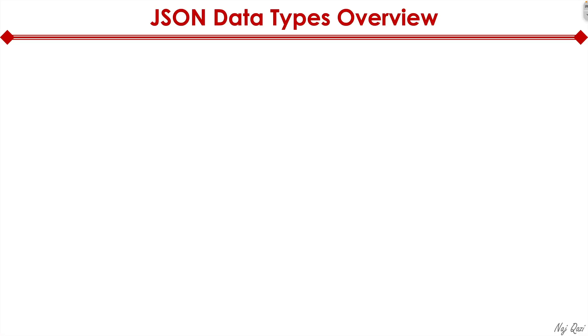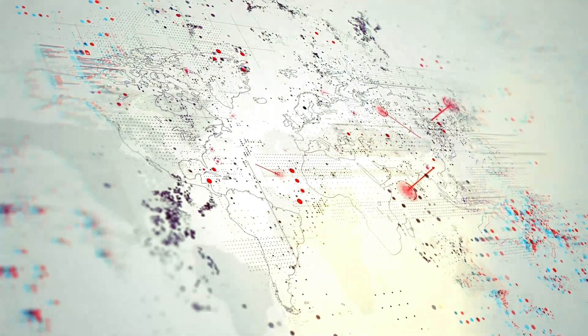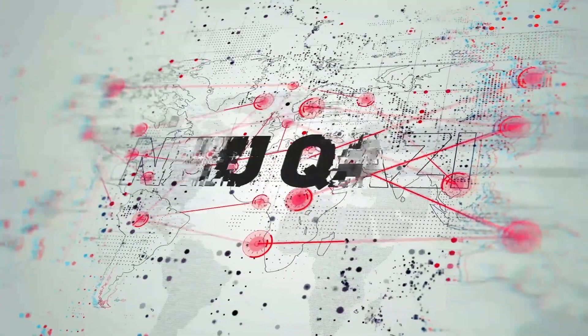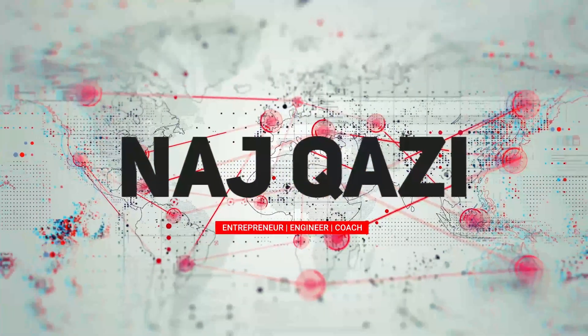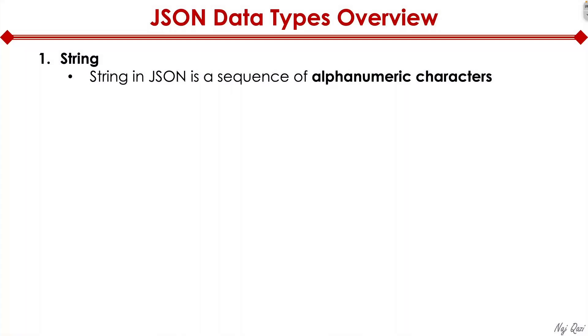The first type of JSON data type I want to bring to your attention is string. String in JSON is a sequence of alphanumeric characters. Here's a sample code.